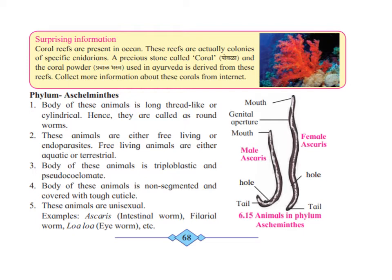These roundworms can be found in water or on land. The body is triploblastic and pseudocoelomate. The body of these animals is smooth, non-segmented, and covered with a tough cuticle — if you touch it, you feel a tough covering. They are unisexual, meaning the sexes are separate.